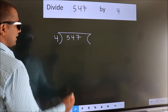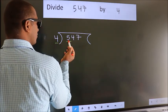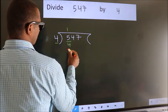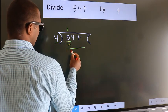Next. Here we have 5, here 4. A number close to 5 in 4 table is 4 once 4. Now, we should subtract. We get 1.